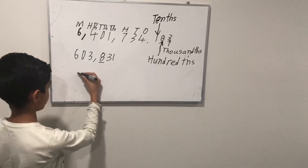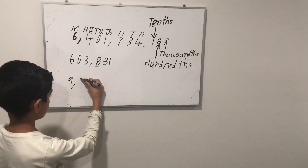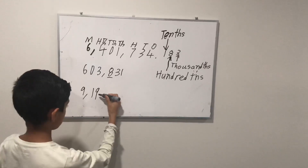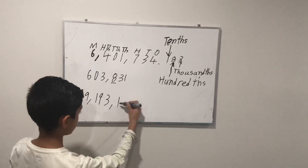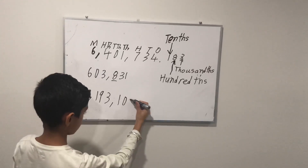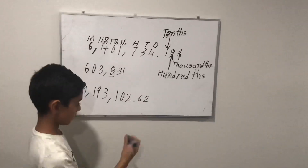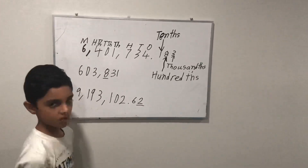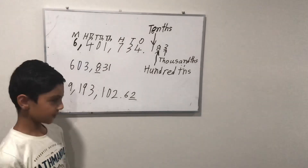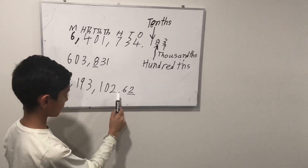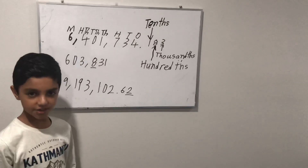Now I've got another question. Nine million, one hundred ninety-three thousand. What place is this? Do you know? Let's see — ones, tens, hundreds. It's the hundreds. So the correct answer is the hundreds place.